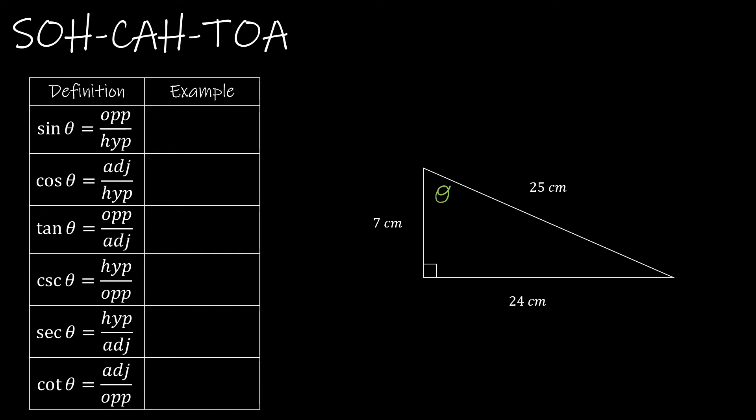If theta is this angle, then opposite would be 24 and hypotenuse would be 25. So sine of theta equals 24 over 25, and cosecant would be 25 over 24. So that one flipped over.